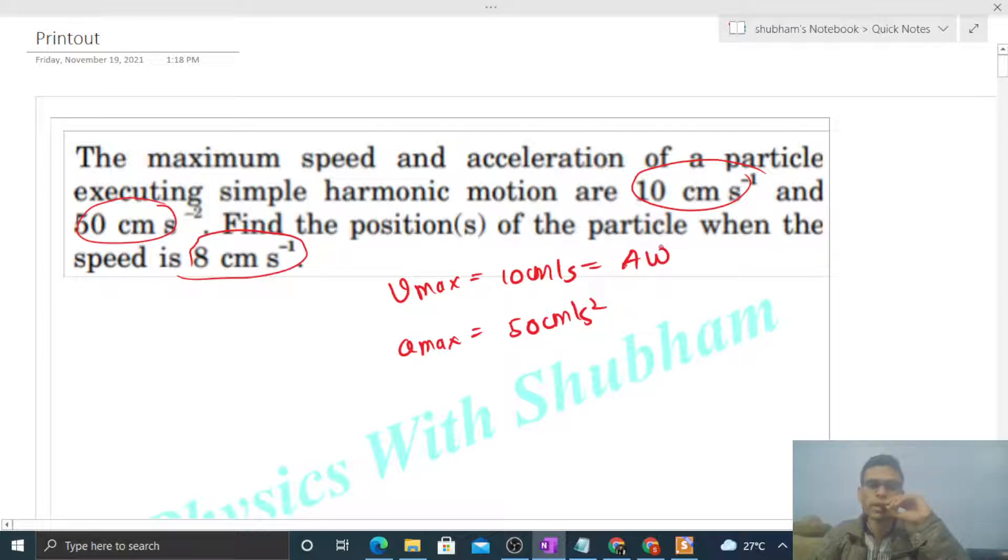Maximum speed, what will you write? A into omega. For SHM, the maximum speed is A into omega, where A is amplitude and omega is angular frequency. Similarly, maximum acceleration will be A into omega square.